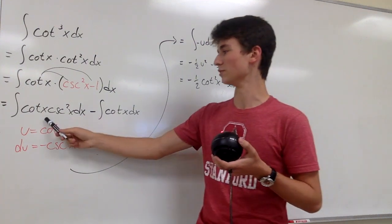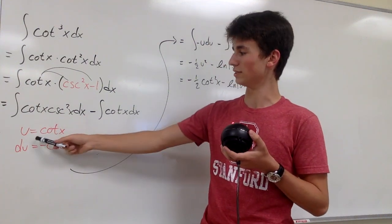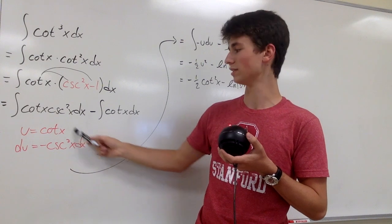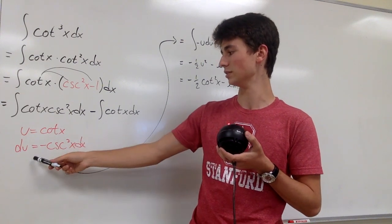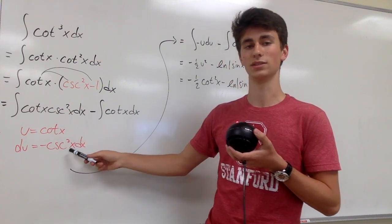And then for this, we can do a u substitution, where u is equal to cotangent of x. And then we differentiate this to get du equals negative cosecant squared dx.